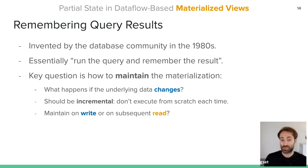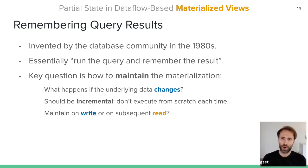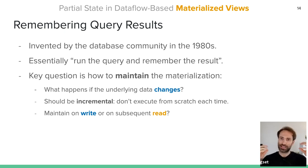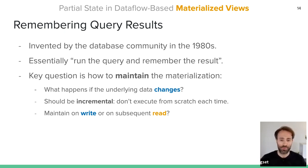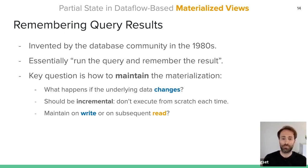The key question with materialized views, just like with caches, is how to maintain that materialization when the data changes — this is called materialized view maintenance. Ideally, we want this maintenance to be incremental: if a story has a hundred thousand votes and one more comes in, we'd like the system to just increment the count by one rather than recomputing from scratch. We also face the question of whether to maintain on write, proactively, or lazily on demand on later reads.